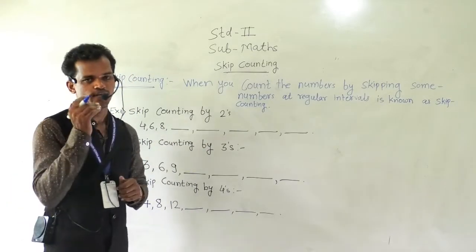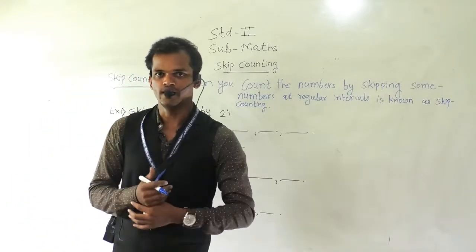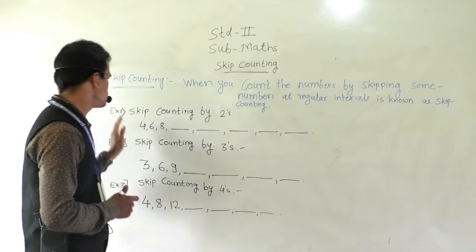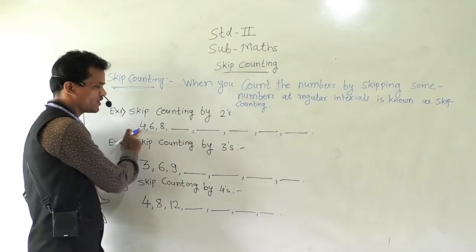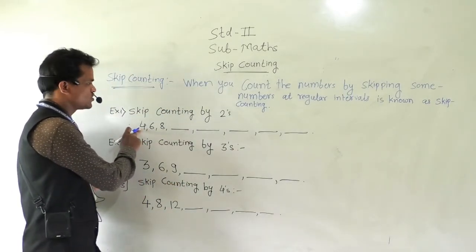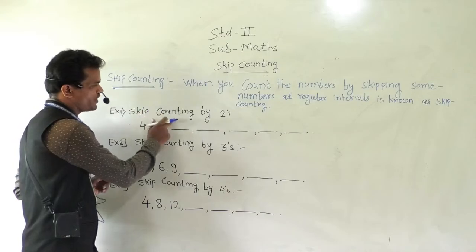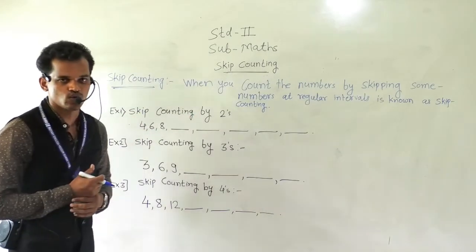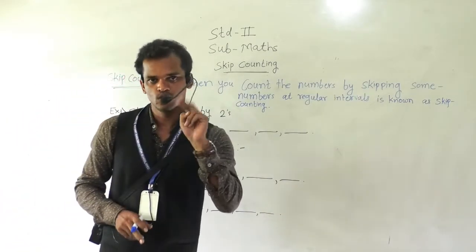Now we will see one example so you will understand. First, 4. So here, skip counting by 2's. Every time you have to skip.